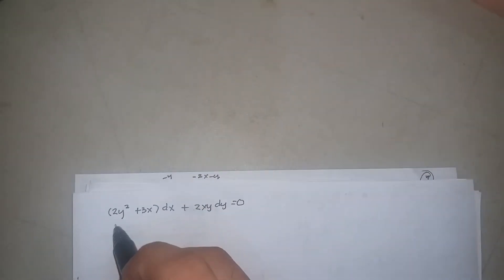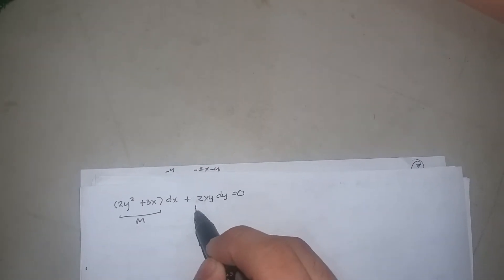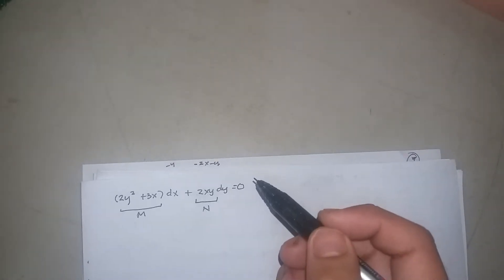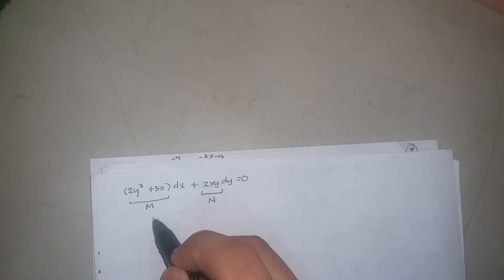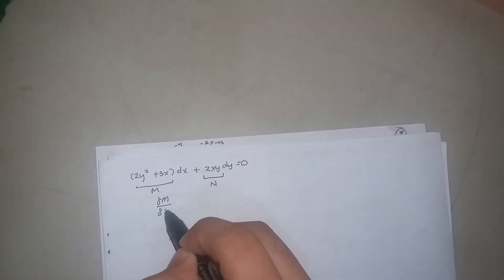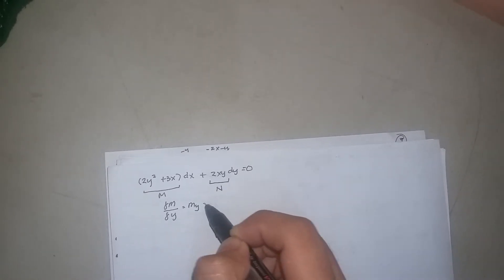First, this will be denoted as M and this is our N. First we're going to check if it is exact or not by partial derivative of M with respect to y, or simply My equals to...